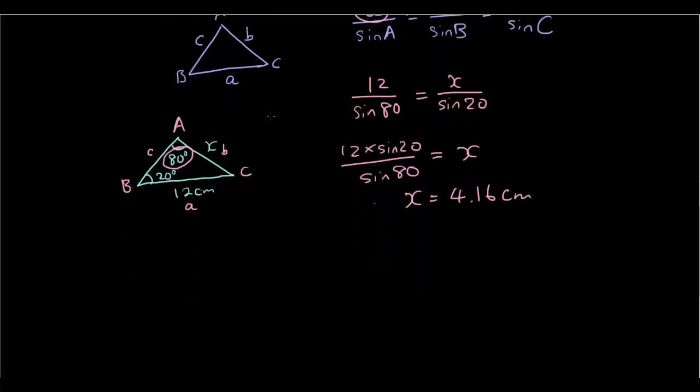Another possible question is by giving you two opposite sides and asking you to find the angle. So for example, let's say this side is 13 and this side is 14. If this angle was 80, how big is this angle? I'm going to call it y. So substituting these in the formula, I have 14 over sine y equals 13 over sine 80.